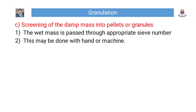Step 3 — Screening of the damp mass into pellets or granules: The wet mass is passed through an appropriate sieve number. This may be done by hand or by machine.